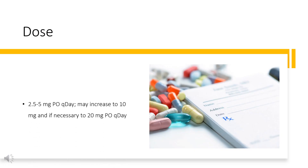Dose: The dose of this medicine will be different for different patients. For hypertension: 2.5–5 mg orally once daily, may increase to 10 mg and, if necessary, to 20 mg orally once daily. For heart failure: 1.25 mg orally once daily, increase gradually if necessary, not to exceed 10 mg per day.